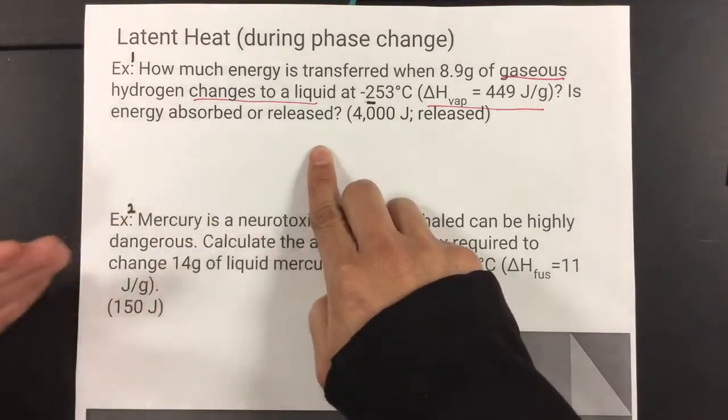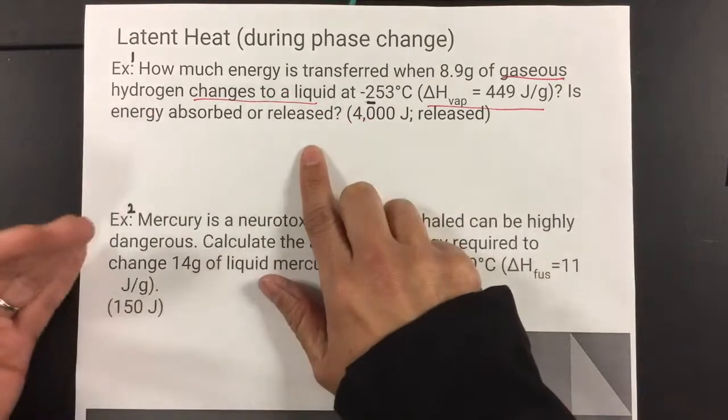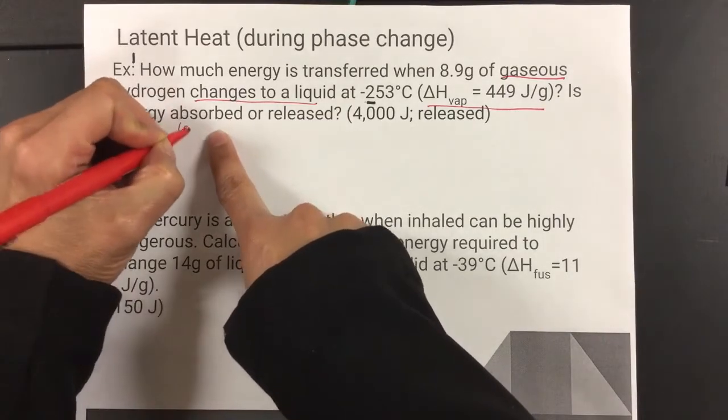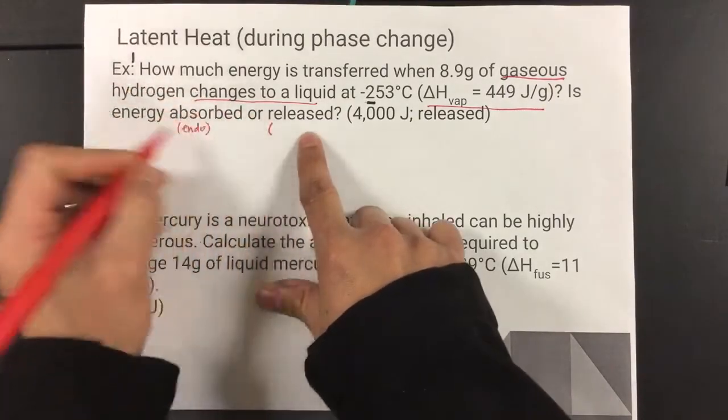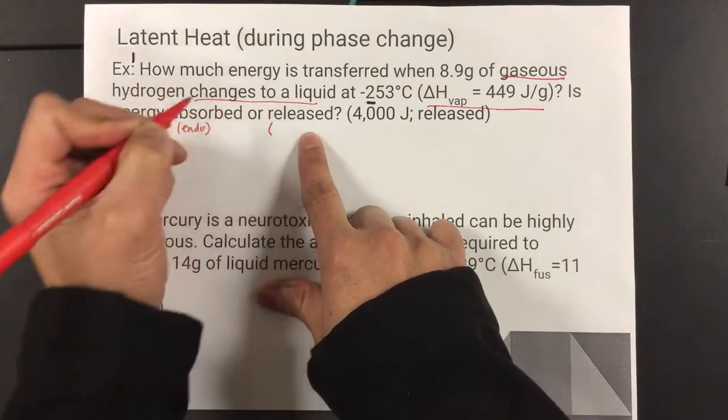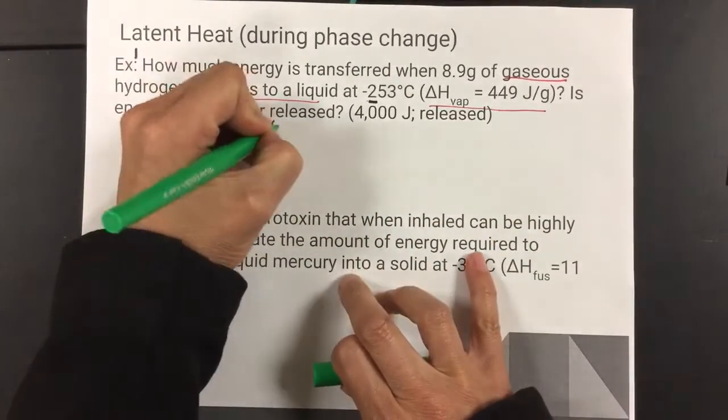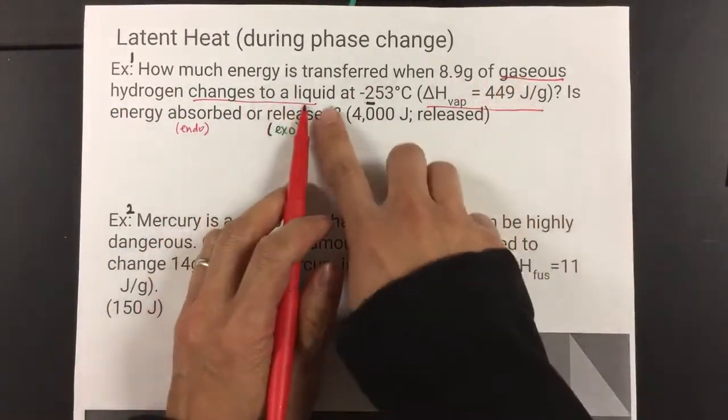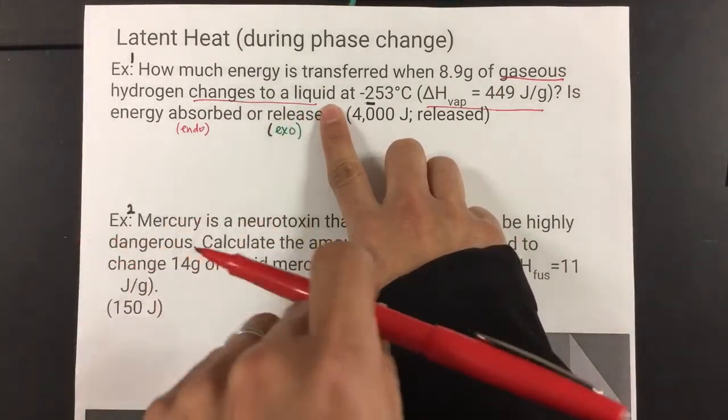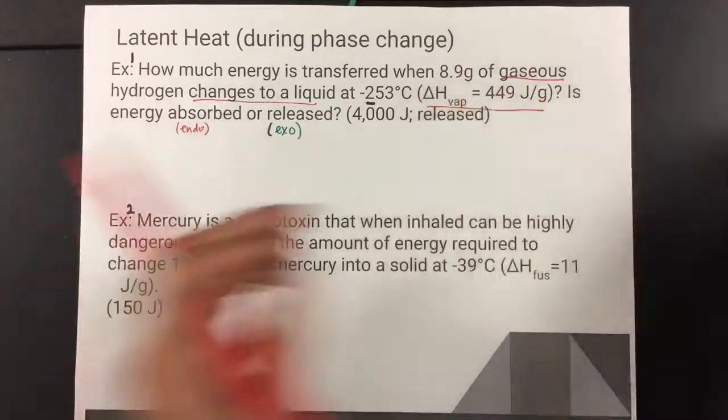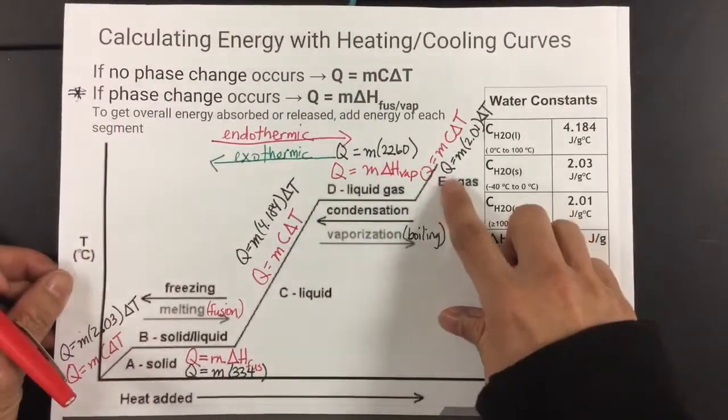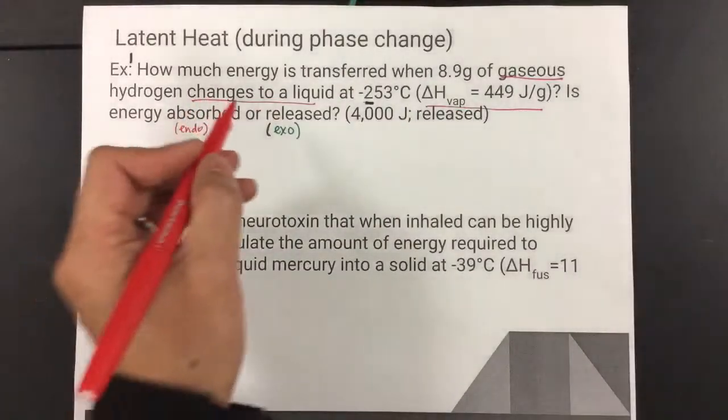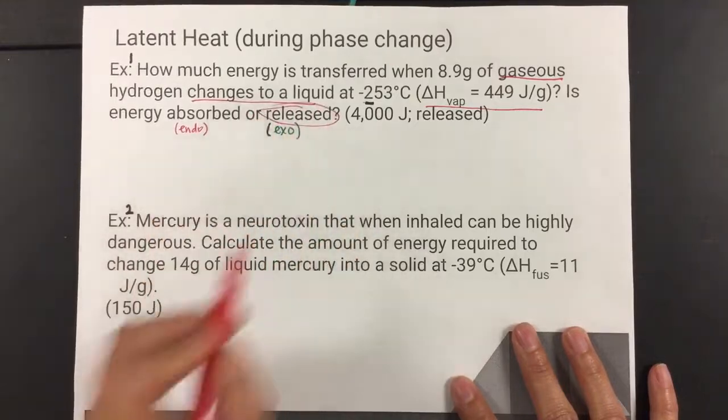Remember, if it's going along the heat curve, if it's going from left to right, where you're adding heat in order to change the phases, then it's an endothermic process. Otherwise, which is absorbed. Endothermic means absorbed. And then if it's going the opposite way, then it means it's exothermic. So if you're having a substance that's going from gas to liquid, you're actually going the opposite way on the heat curve, which is from gas to the liquid phase. If it's exothermic, we're going to be expecting the word released.